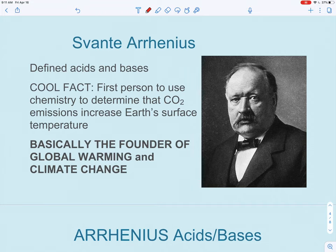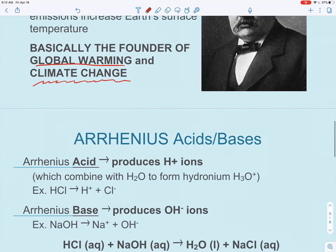I'm going to talk about this guy Svante Arrhenius. So he gave his own definition of acids and bases, which is awesome. But he also was the first person to use chemistry to figure that carbon dioxide emissions increase the Earth's surface temperature. Basically this is the idea behind global warming and now more commonly we hear about climate change. So really, really distinguished scientist, this guy.